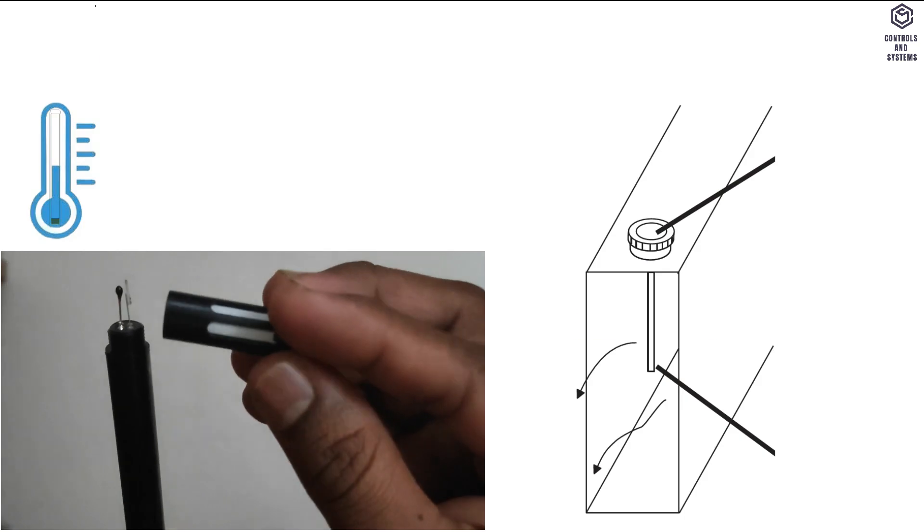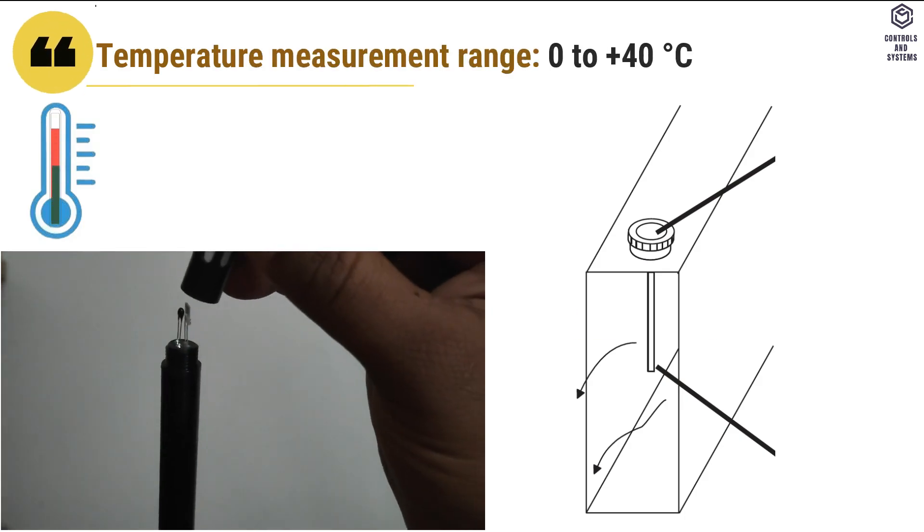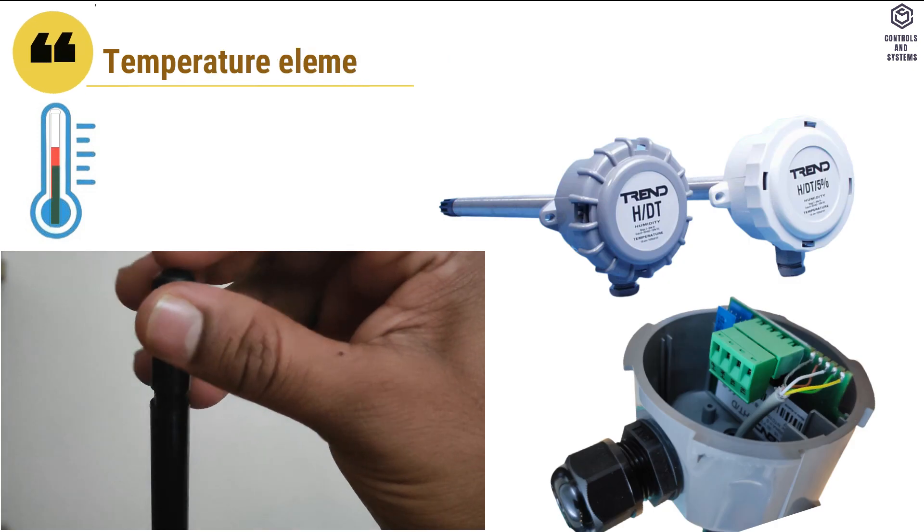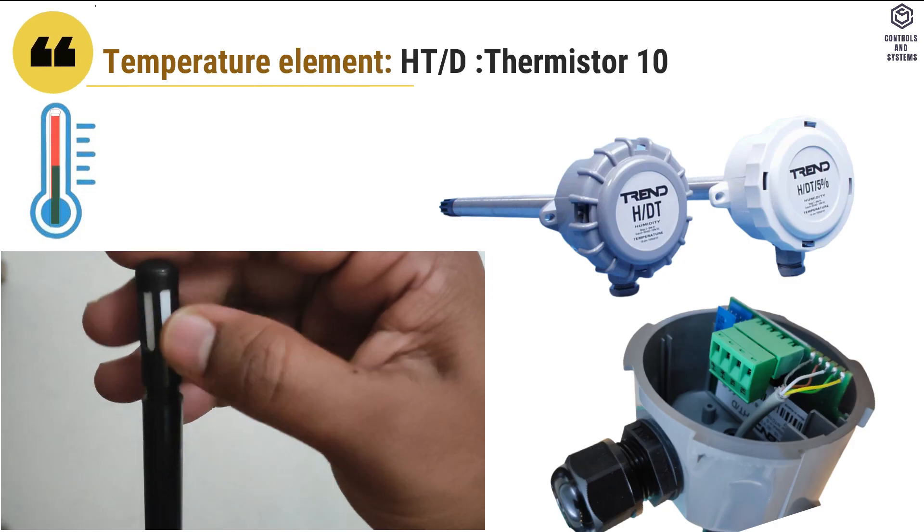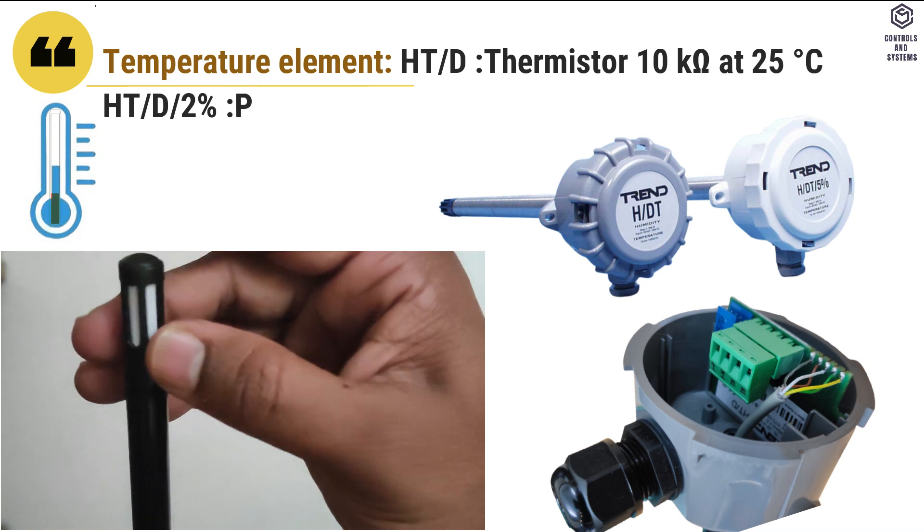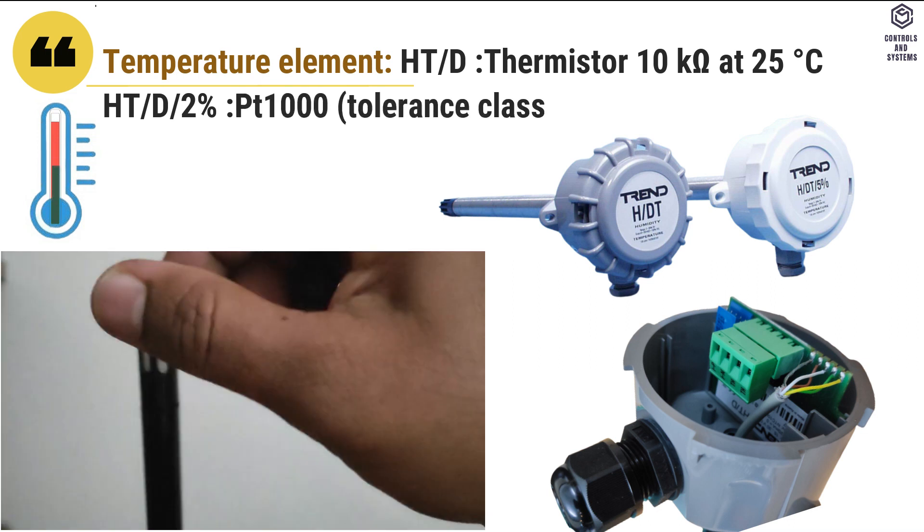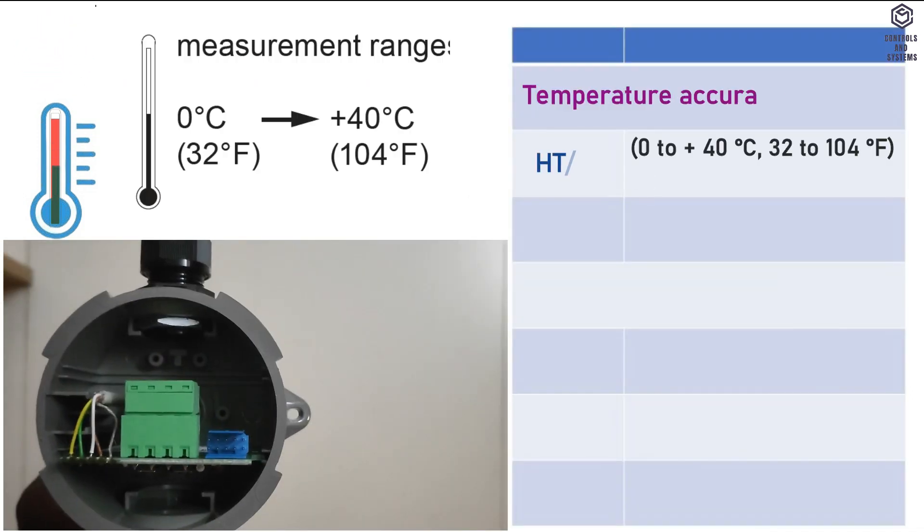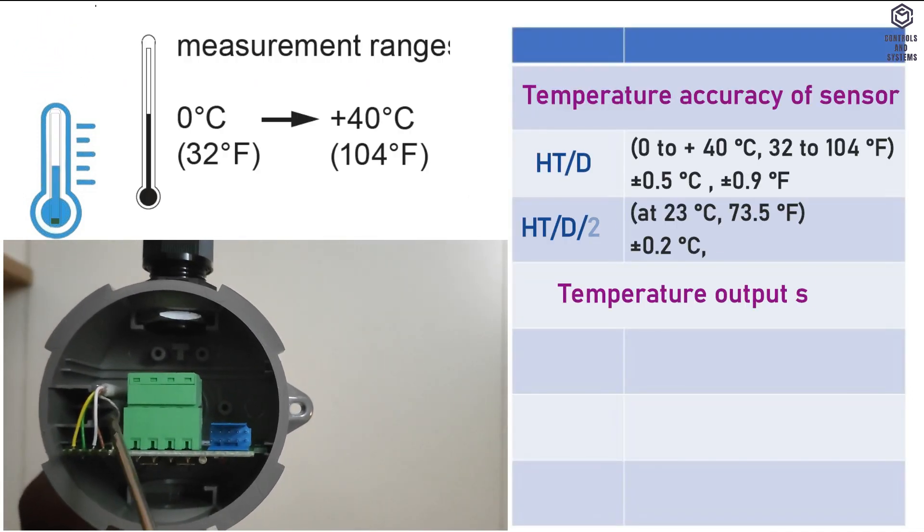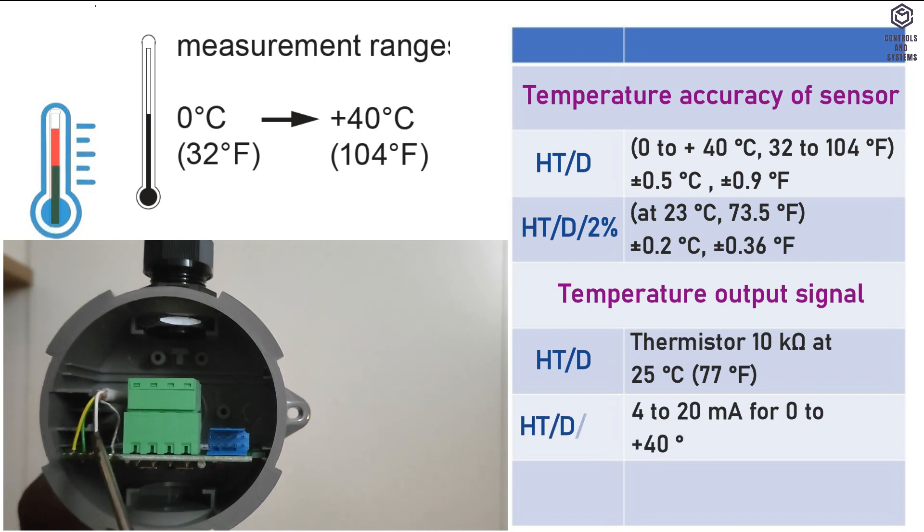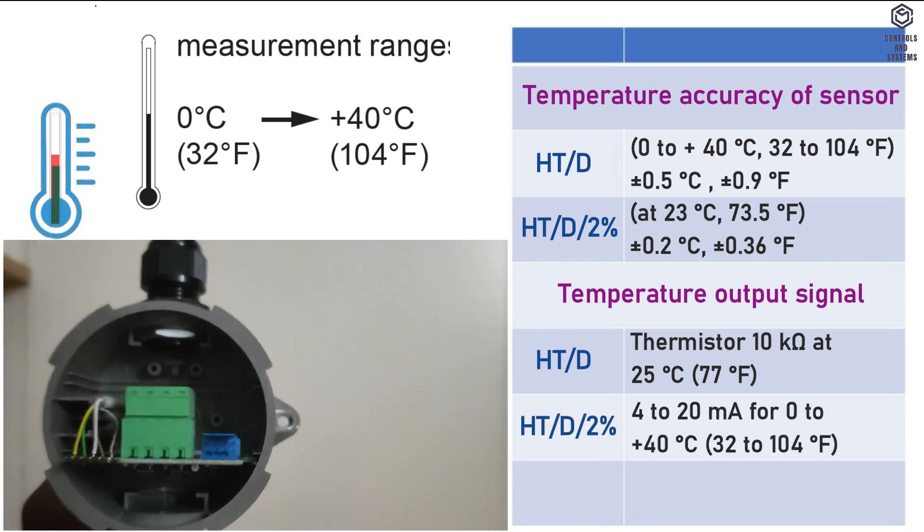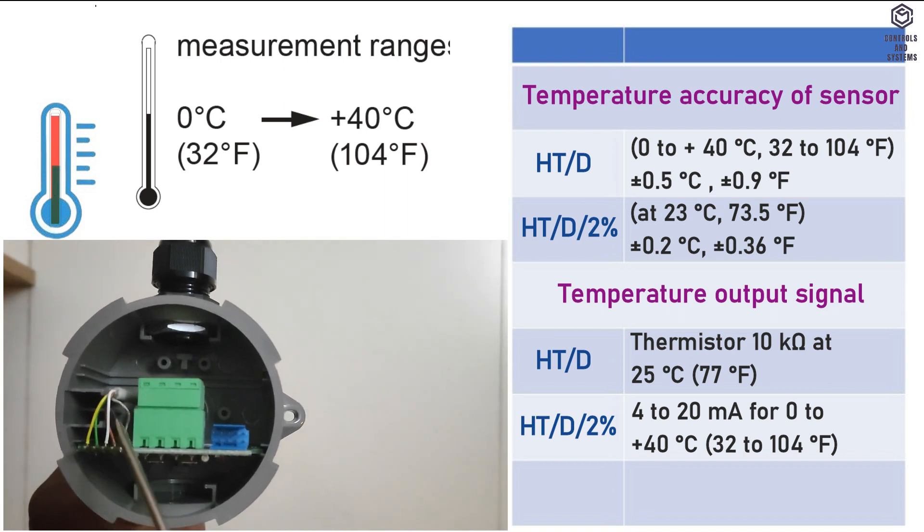Temperature: Temperature measurement range is 0 to +40°C. Temperature element for HTD model sensor is thermistor 10 kilo ohm at 25°C. HTD 2% model sensor is PT 1000. Temperature accuracy, temperature output signal of HTD and HTD 2% sensor model ranges and specification are shown in the table column.